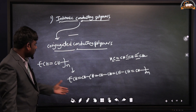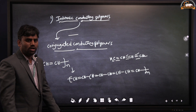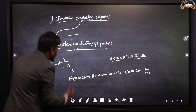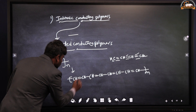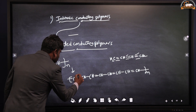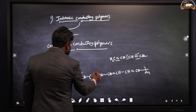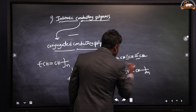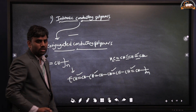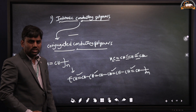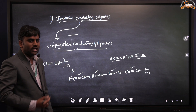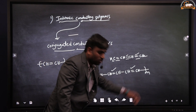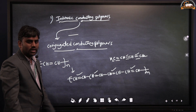Polyacetylene possesses pi electrons — this molecule contains alternating double bonds. Double bond, single bond, double bond, single bond, double bond, single bond, double bond — throughout the backbone of the polymer chain, pi electrons are present. These pi electrons are moving from one end of the polymer chain to the other end, and this is called conjugated conducting polymers.